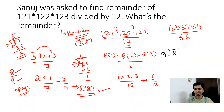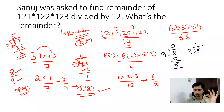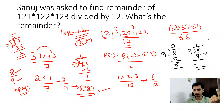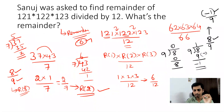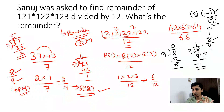For 8 ÷ 9: since 8 < 9, we get 0 × 9 = 0, so the remainder is 8. But you can also use the negative remainder concept: 1 × 9 = 9, and 8 − 9 = −1, so the negative remainder is −1. To convert a negative remainder to a positive remainder, add it to the denominator: −1 + 9 = 8. So the positive remainder is 8.